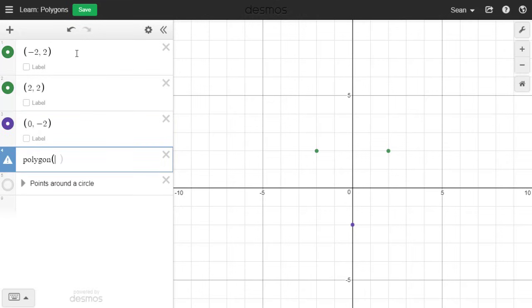One way you could do this is by typing polygon, open parentheses, and then typing in the coordinates you want. Use commas to separate your points.